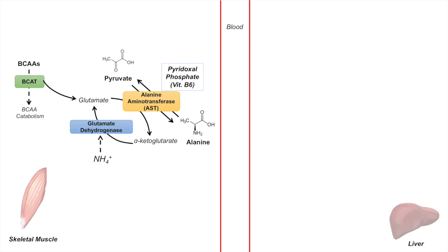Where does the pyruvate come from in the skeletal muscle? It comes from the breakdown of glucose through the glycolysis pathway. The glucose itself can come from glycogen through glycogenolysis or through GLUT4 uptake.